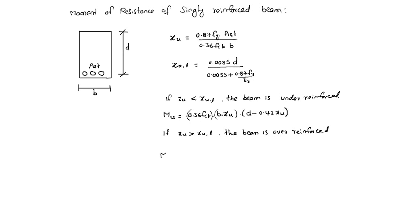In this case we should limit the MU value. MU limiting, or otherwise MU value can be determined other way also, which equals 0.87 fy into AST into D minus 0.42 XU. Either formula we can use because tension equals compression. We can use either formula, but if XU is greater than XU limiting...